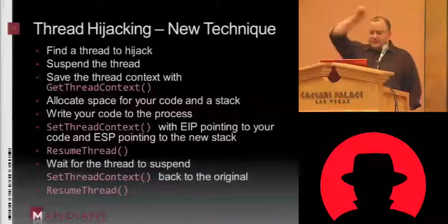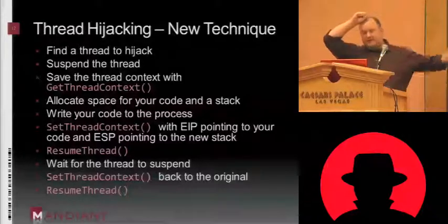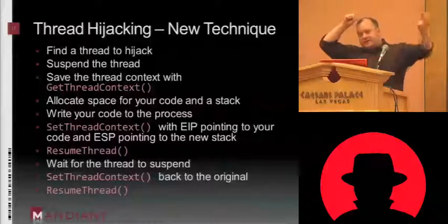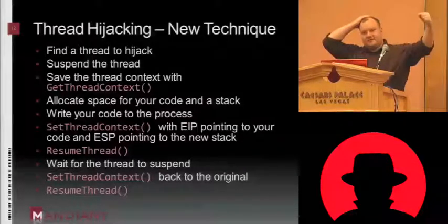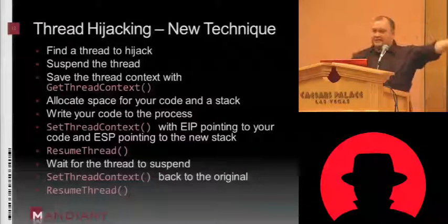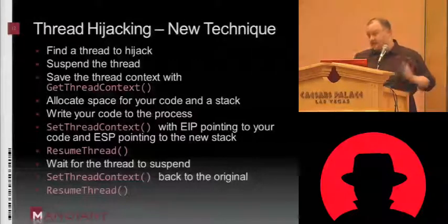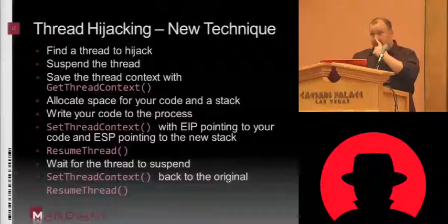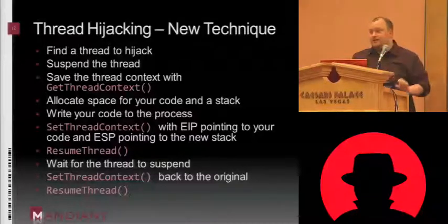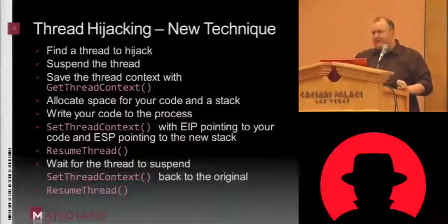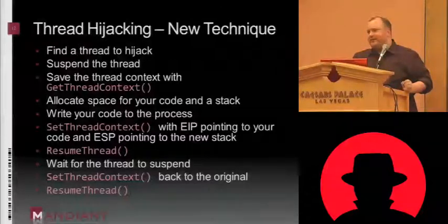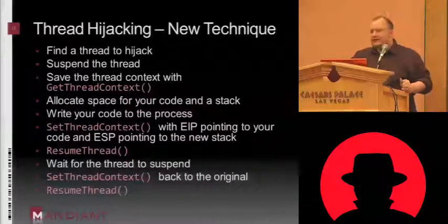So all you want to do is save off that thread context, allocate your new code and your new stack, use SetThreadContext to set EIP to the new code and set the stack pointer to the new stack. Then you can just resume the thread, and that new code allocated in that process is going to start executing — which is pretty neat. But in and of itself that's somewhat dangerous, because you've just broken the entire original process. That's not cool, especially if it's explorer.exe — they're going to kill the process pretty quickly.